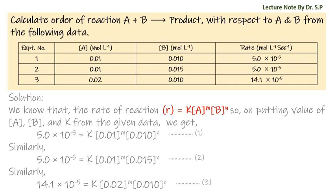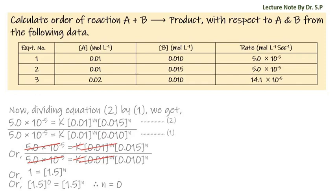Now dividing equation 2 by equation 1: [5.0 × 10⁻⁵ = k × (0.01)^m × (0.015)^n] divided by [5.0 × 10⁻⁵ = k × (0.01)^m × (0.010)^n]. Here 5.0 × 10⁻⁵ cancels with 5.0 × 10⁻⁵, k cancels with k, and (0.01)^m cancels with (0.01)^m, giving us 1 = (1.5)^n.